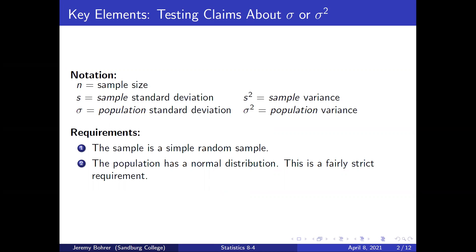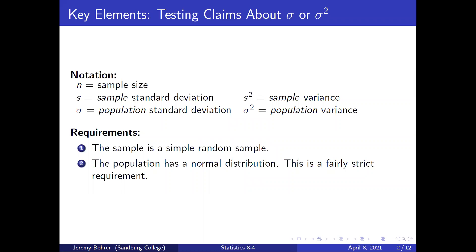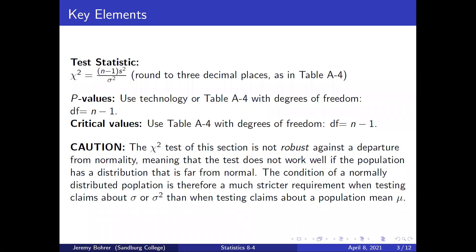Requirements: the sample is a simple random sample, and the population has a normal distribution. This is a fairly strict requirement. The test statistic is chi-square, which is equal to n minus 1 times s squared over sigma squared, rounded to three decimal places as in table A4.